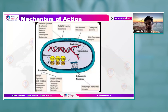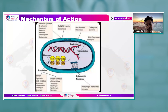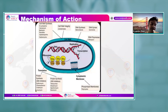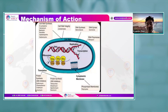DNA synthesis inhibitors include metronidazole. DNA gyrase inhibitors include fluoroquinolones such as moxifloxacin and levofloxacin. RNA polymerase inhibitors include rifampicin. Ribosomal inhibitors — which inhibit translation and thus protein synthesis — include 50S inhibitors like erythromycin, chloramphenicol, clindamycin, and kanamycin; and 30S inhibitors like tetracycline and streptomycin. Cytoplasmic membrane inhibitors include polymyxins.